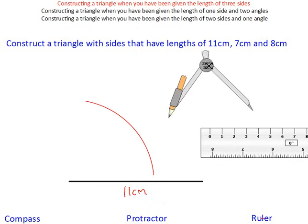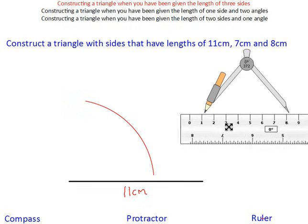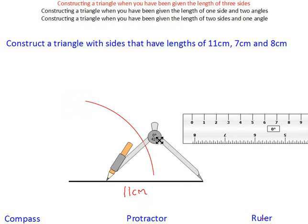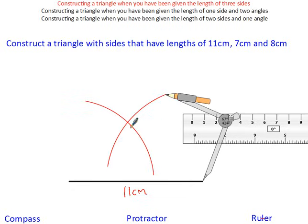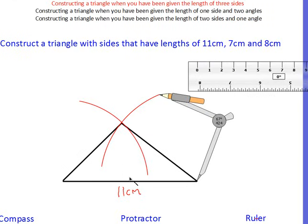Then for the next one, we're going to open to 8 centimeters. Get it lined up with your ruler, open it up to 8 centimeters, and then go to the other side of your baseline and do a nice arc. Where those two arcs intersect is where you need to join the base with that line and then the other side of the base with that line. And then you've constructed your triangle.